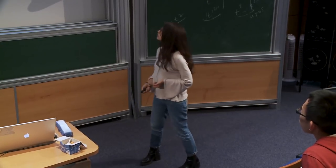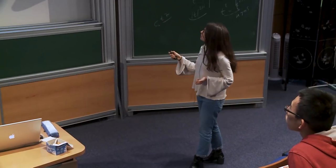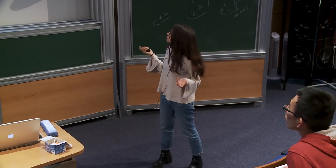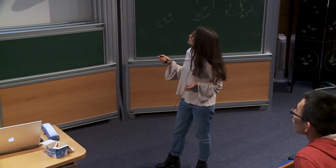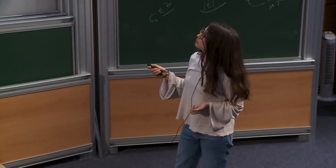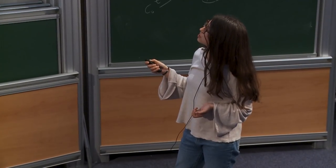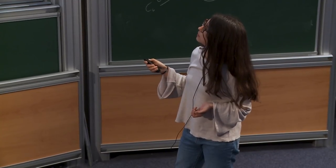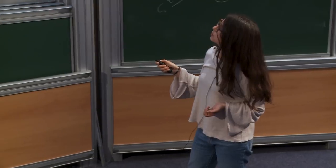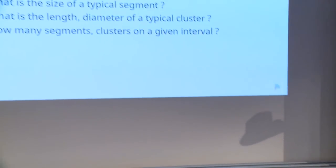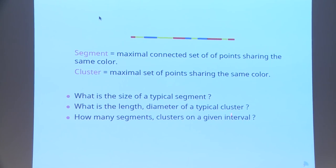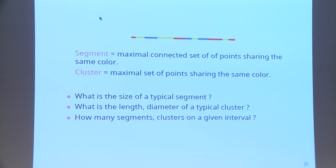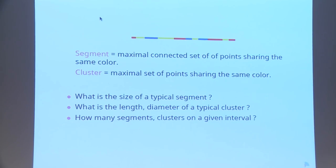To study this mosaic of colors, we are going to use a model. If this is one chromosome, I call a segment a maximal set of connected points which share the same color. I call a cluster a set of points sharing the same color — for example, the blue cluster. The kinds of questions I want to ask are: what is the size of a typical segment, what is the length or diameter of a typical cluster, and how many segments or clusters are there in a given interval?